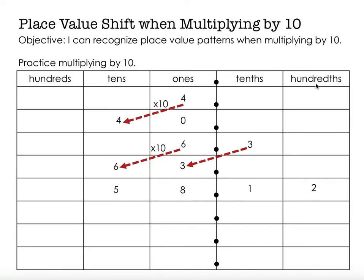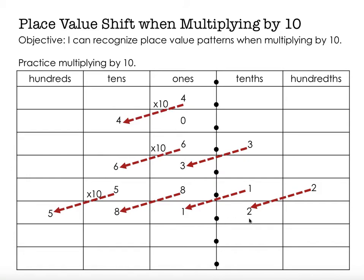I want to take 58 and 12 hundredths and multiply it by 10. I need to make each of those digits go 10 times bigger and move in our place value chart, because each part is going to get 10 times bigger. So 5 tens becomes 5 hundreds, 8 ones becomes 8 tens, 1 tenth becomes 1 one, and 2 hundredths becomes 2 tenths. So my new number is 581 and 2 tenths. Read it with me please: 581 and 2 tenths.